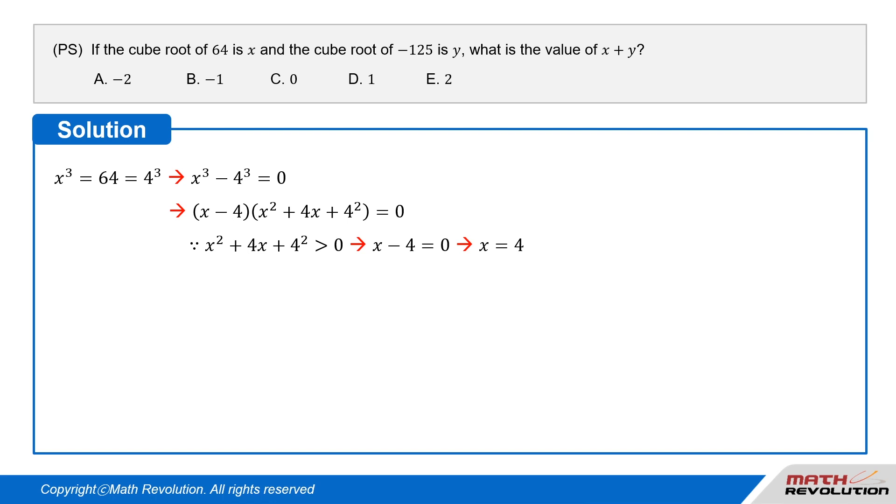So, x minus 4 times (x squared plus 4x plus 4 squared) is greater than 0 is always true. We have x minus 4 equals 0, or x equals 4.